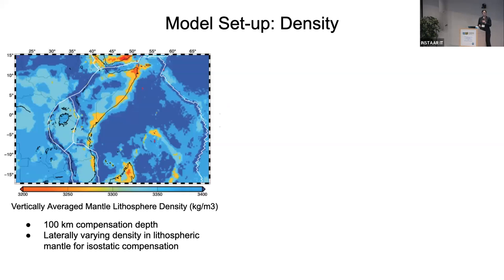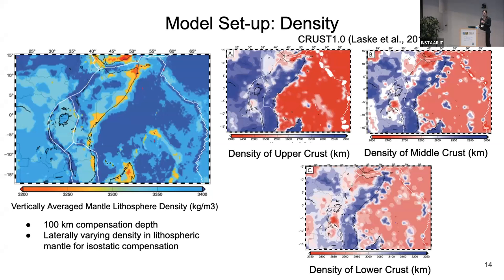For the density structure, we assumed isostatic compensation at 100 kilometers depth by constraining the mantle lithospheric density to be laterally varying so the system is isostatically compensated. The mantle lithospheric vertically averaged density is shown — red indicates lower density, blue indicates higher density. We had three different crustal density layers: upper, middle, and lower crust.